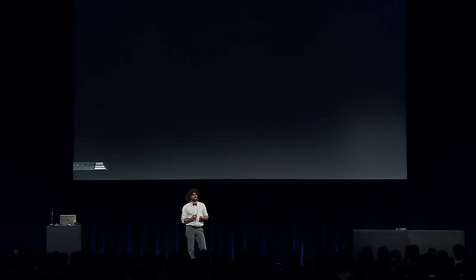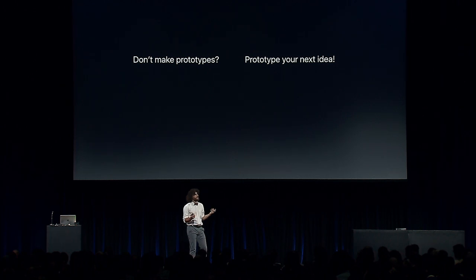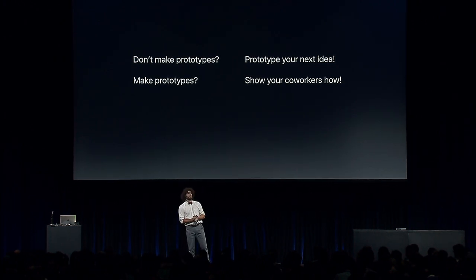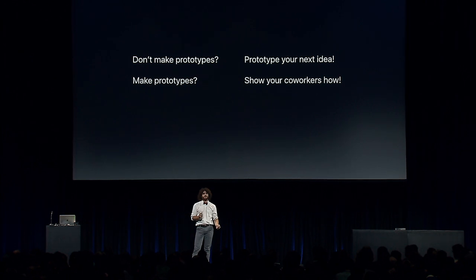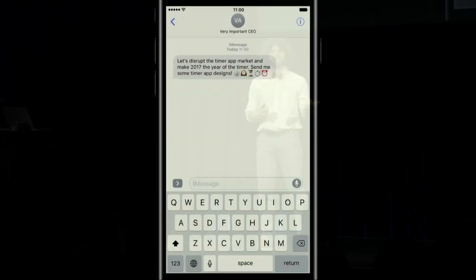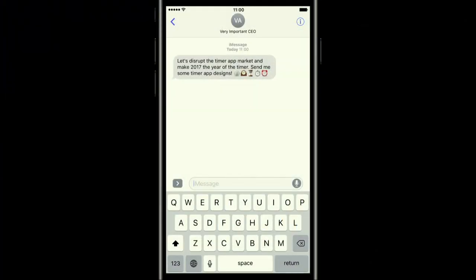As you're leaving WWDC later today, here are a few things you can do. If you don't make prototypes already, the next time you have an idea for an app or a feature, make prototypes and show them to your colleagues. If you already make prototypes, wonderful — find coworkers who don't and show them how you do it. And if you manage a team, make sure you're building the right thing by making time for prototyping as part of your process and culture. Imagine how wonderful it would be if the next time you get a text message like this from your CEO, you can reply just 60 seconds later with a prototype. Thank you.